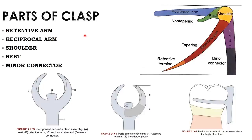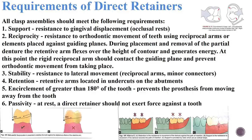The requirements of the direct retainer: First is support — the resistance to displacement of the prosthesis towards the basal tissue or underlying structures, resisting gingival displacement. Support is provided by the rest.